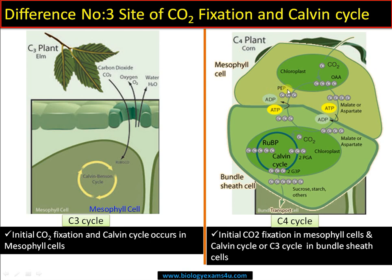Initial carbon dioxide fixation by PEP occurs in the mesophyll cell, then that is converted to malate. Malate is transported to the bundle sheath cell, where carbon dioxide is decarboxylated — making CO2 available for the Calvin cycle. Bundle sheath cells act as a carbon dioxide concentrator, providing RuBisCO with an optimal CO2 concentration, thereby completely nullifying photorespiration. Malate is then converted to pyruvate and subsequently regenerated to phosphoenolpyruvate.